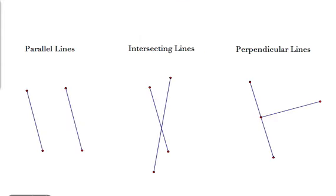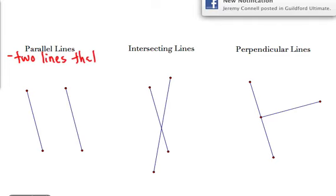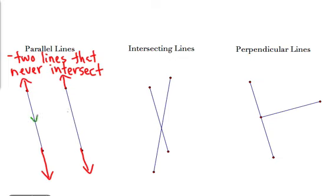Different types of lines. We've got parallel lines, intersecting lines, and perpendicular lines. Parallel lines are two lines that don't ever meet — they never cross. They are constantly at the same distance from each other. The way they'll often show you that lines are parallel is they'll put little arrows on them midway through the line, telling you those lines are parallel.